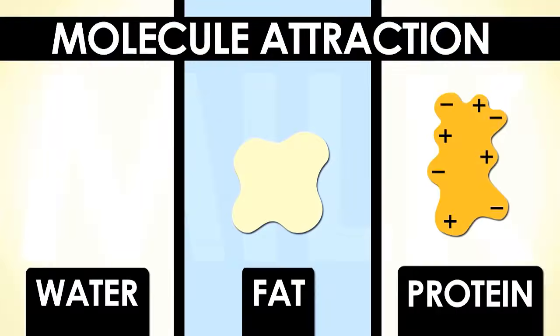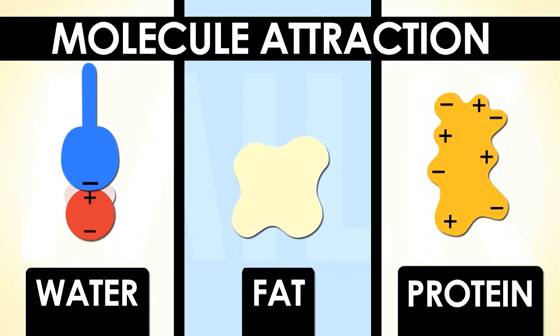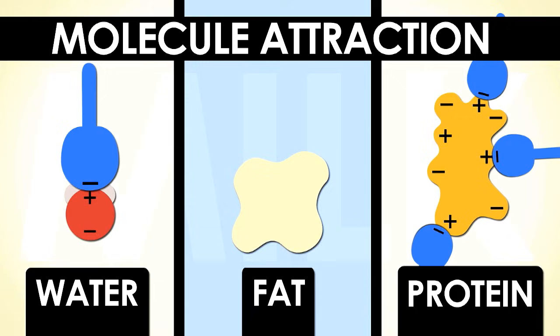Then when you push that detergent down into the milk, the negative end of the detergent molecule again attracts the positive end of the waters. It also attracts the positive part of the protein molecules and then uncharged part of the detergent molecule attracts the uncharged part of the fat molecule.